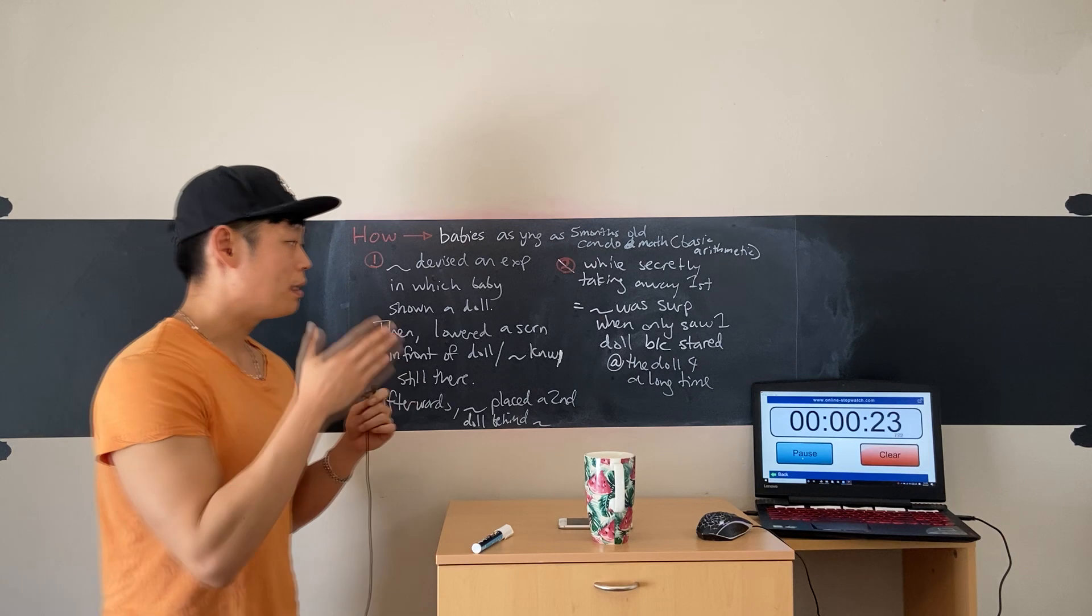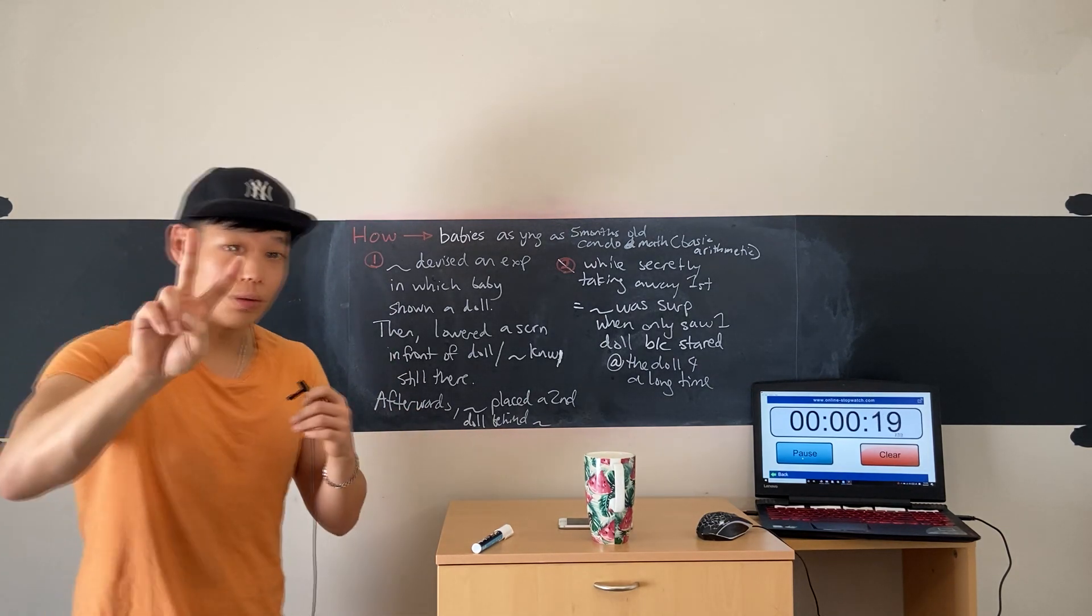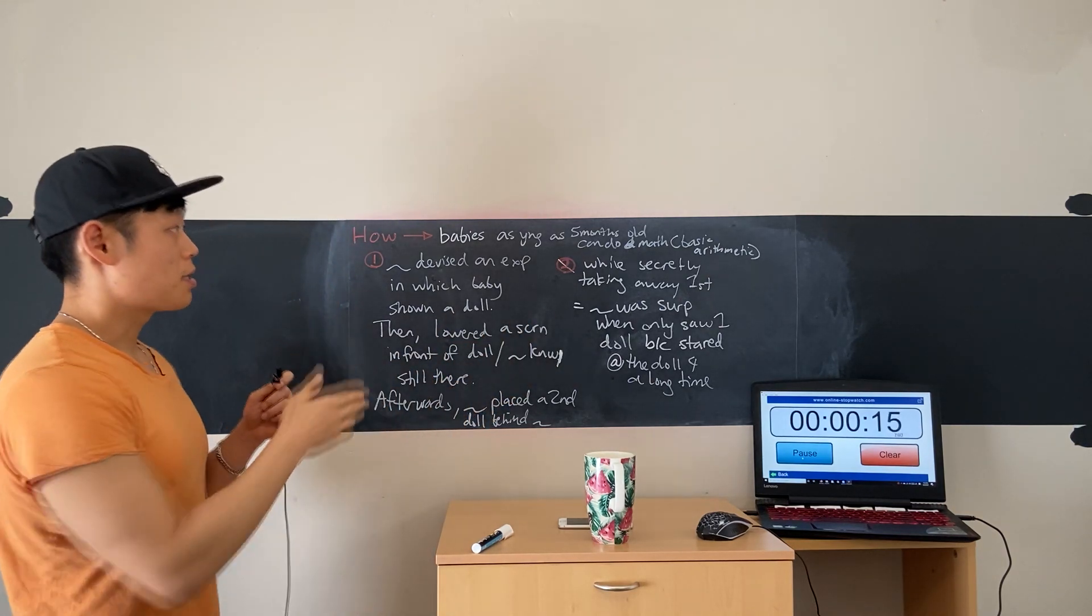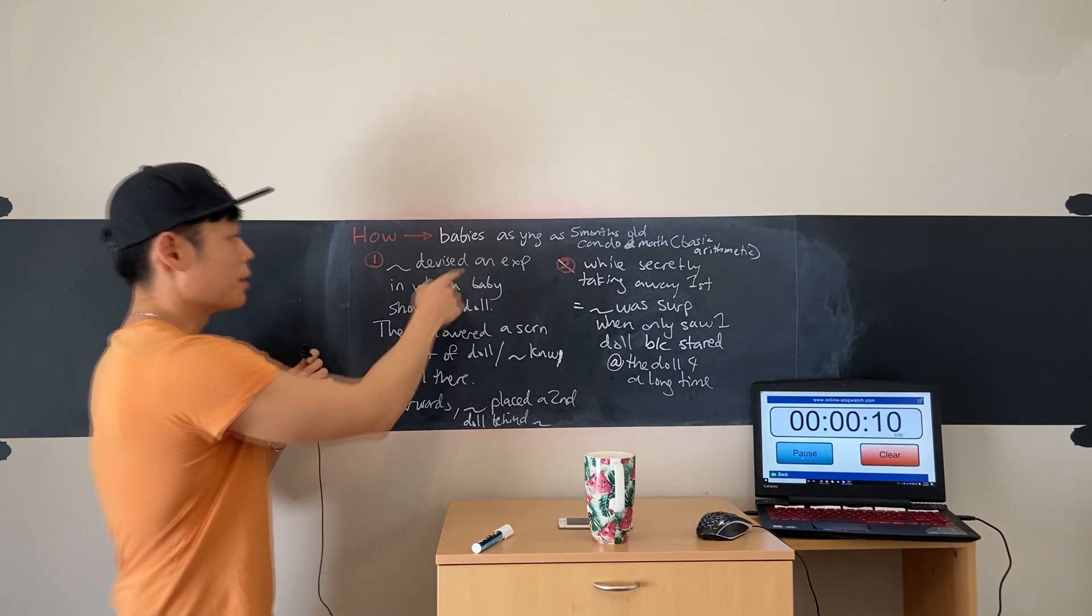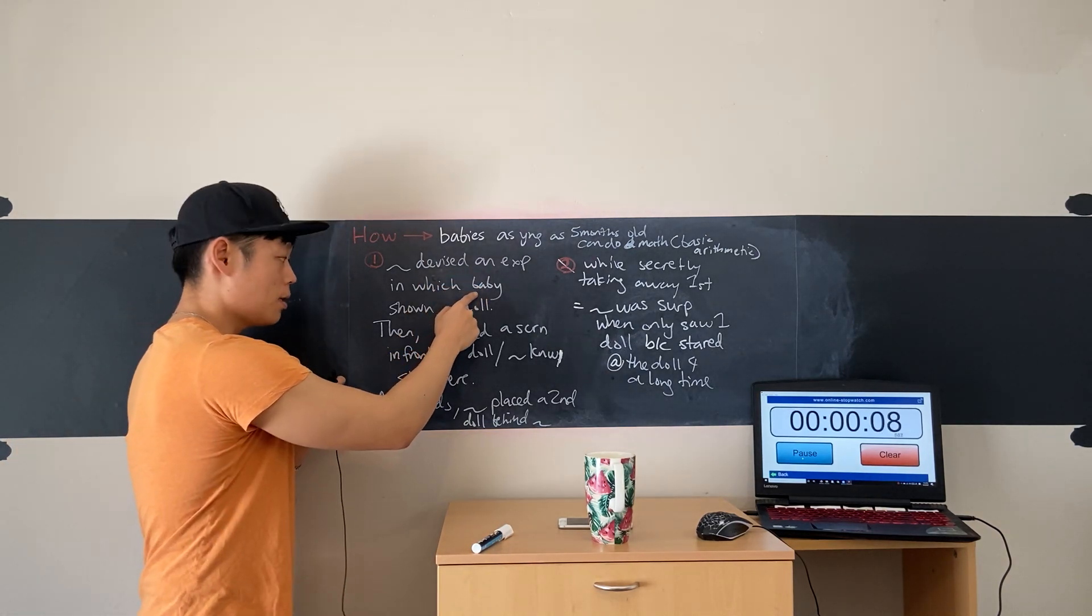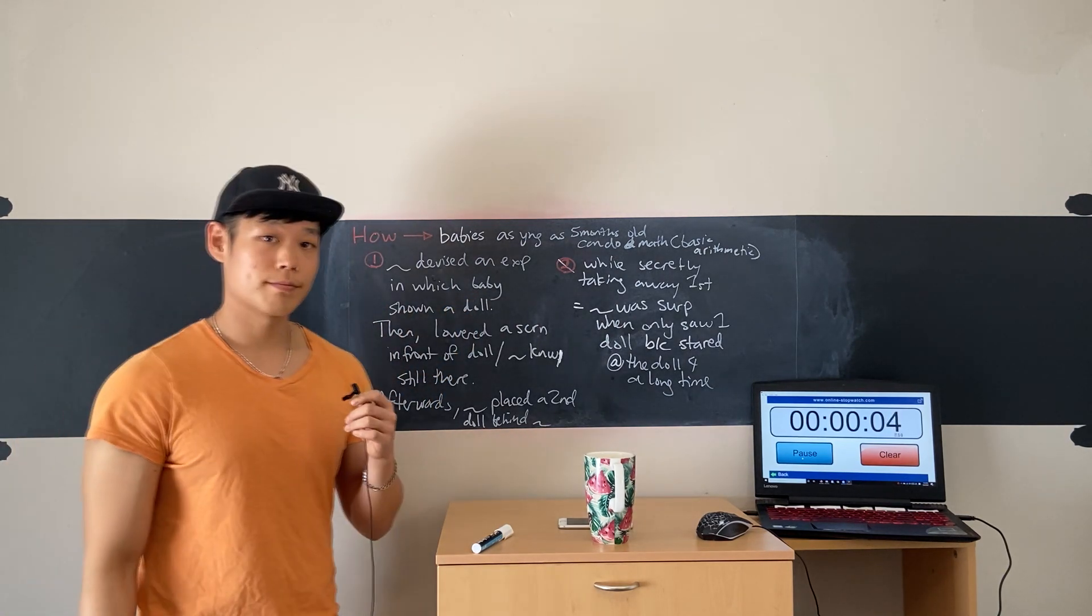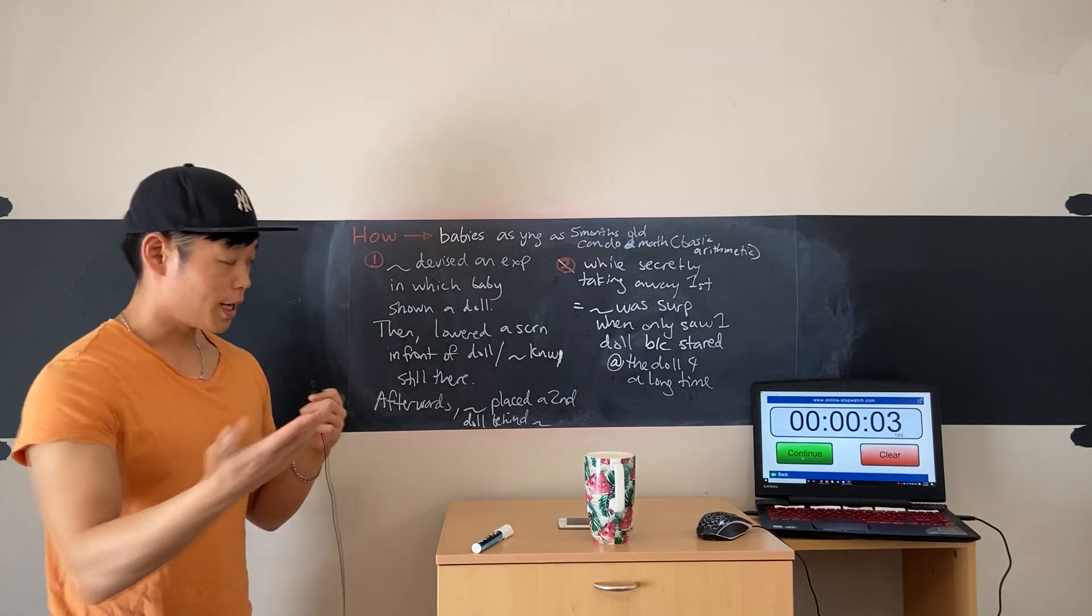And scientists could tell this because the baby stared at the doll for a very long time as he expected to see two. In summation, this was how babies as young as five months old can do basic arithmetic, which was illustrated by an experiment conducted on a young baby with two dolls, given by the professor in the lecture.